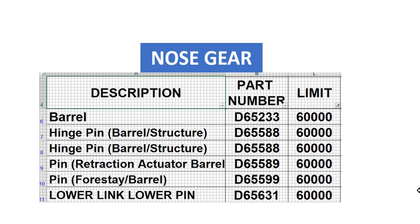These are some components which have life-limited items — the limit is 60,000 landings or 60,000 cycles. Here is the description and part number and limit. I have hidden the serial numbers. These items have serial numbers.